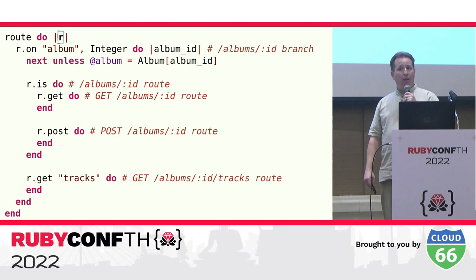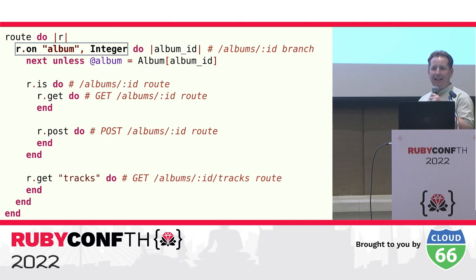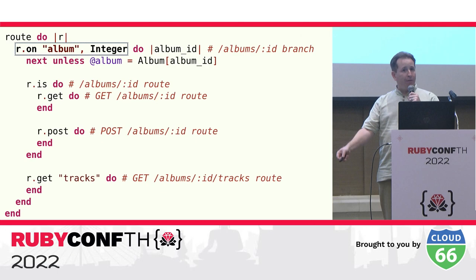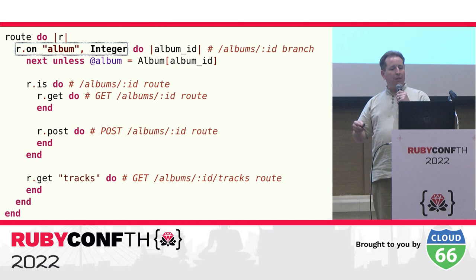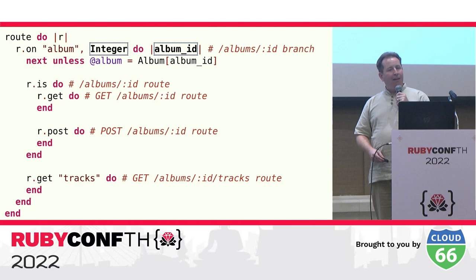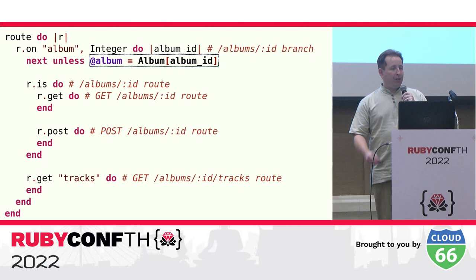Unlike most other Ruby web frameworks where you do not have control over the details of the routing process, with Roda you fully control how routing happens by calling methods on the request object. So r.on will yield to the block if all of the arguments match the request. If the request path starts with '/album/' followed by some number, this will match, that part of the path will be consumed, and the block passed to the method will be called. Because the Integer class was used, if this matches, the number will be yielded to the block as an integer, making it simple to extract data from the request path.